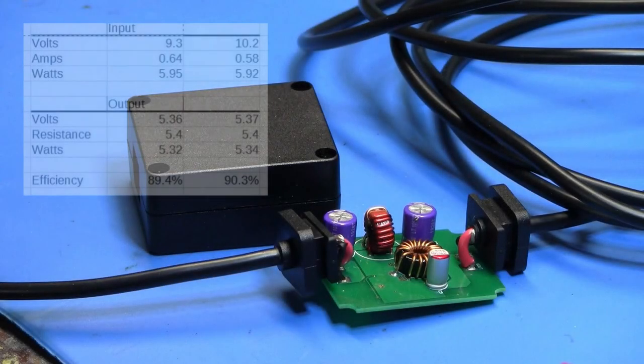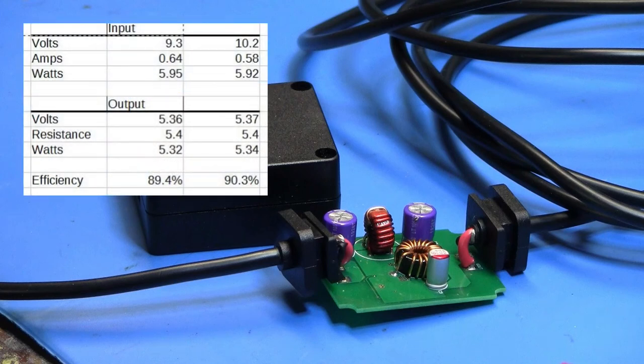Here's a tabulation of data we took earlier. In one trial, we had 9.3 volts of input, 0.64 amps of input, which multiplied together turns into 5.95 watts. At that same point, we had 5.36 volts output. We'd measured the actual resistance of 5.4 ohms. And using the formula of V squared divided by R, that comes out to 5.32, which gets us to 89.4% efficiency.